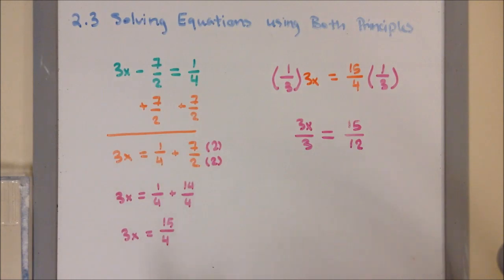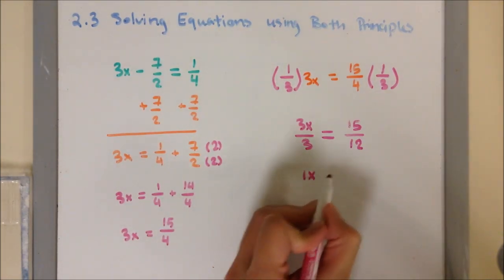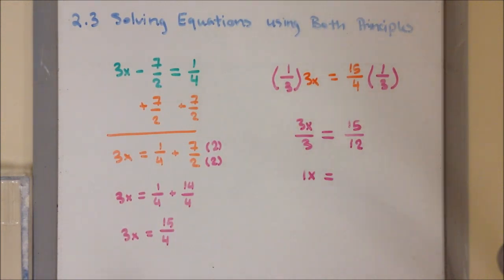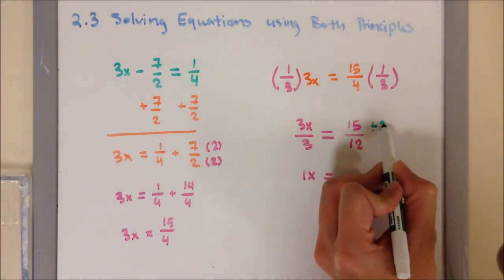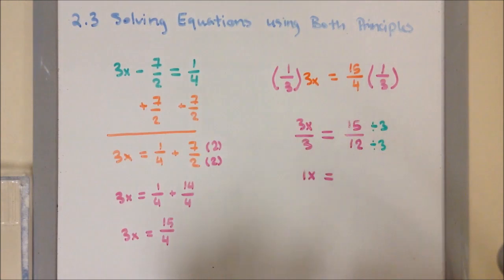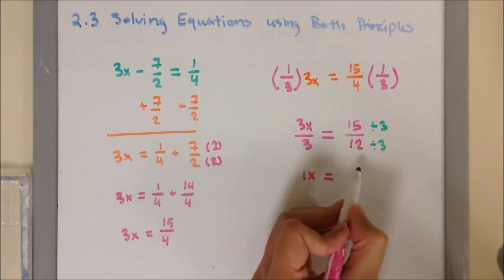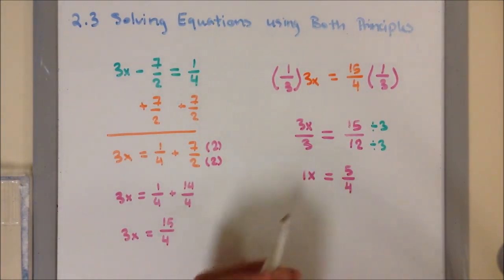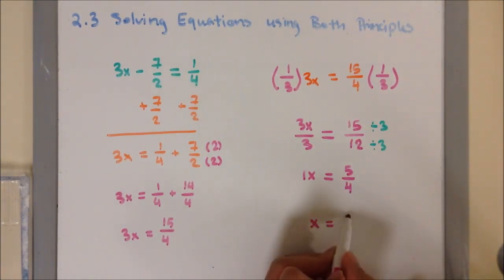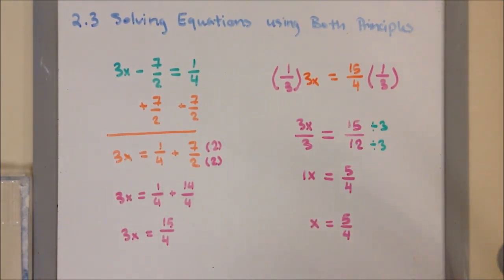Now, 3x divided by 3 is simply 1x. I noticed that 15 and 12 are both divisible by 3. So, dividing both by 3, 15 over 12 simplifies into 5 over 4. So it will be 1x equals 5/4, or x equals 5/4. Any form can be your final answer.